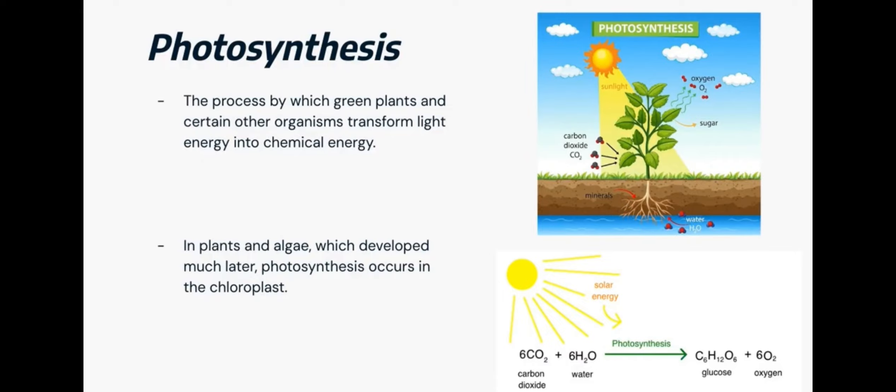We can see in this chemical equation, when solar energy, carbon dioxide, and water goes through the process of photosynthesis, the outcome is glucose and oxygen.